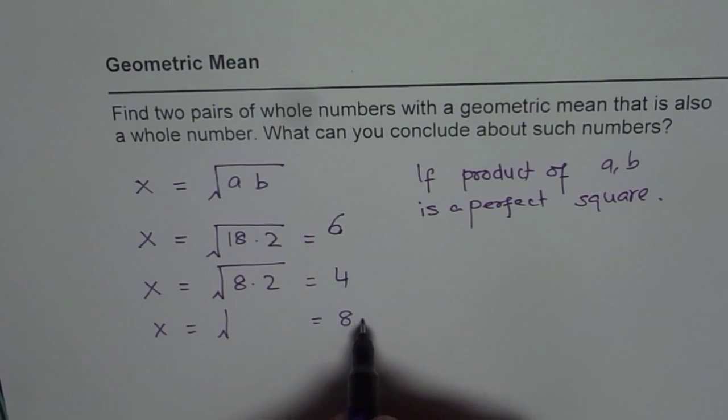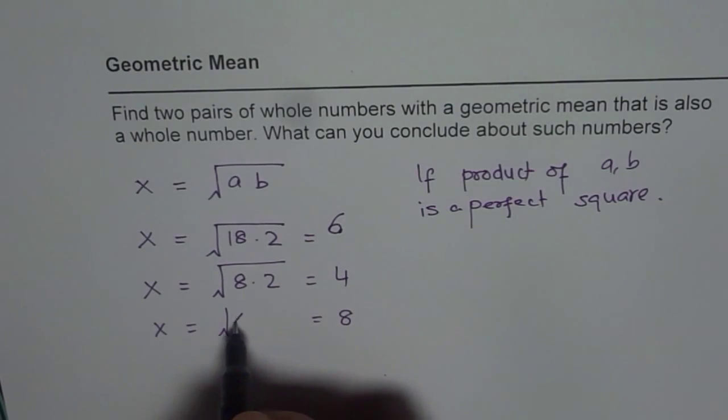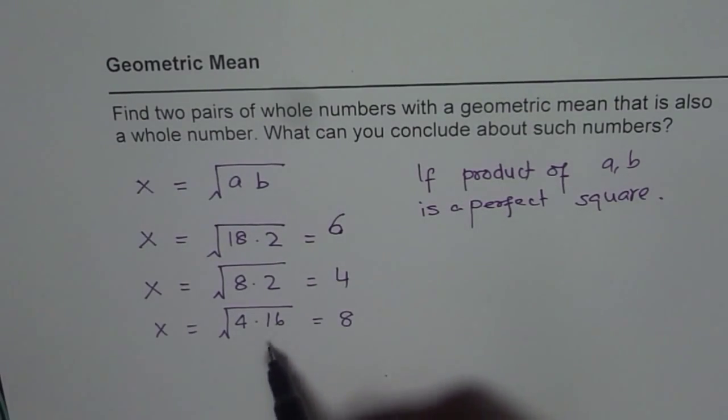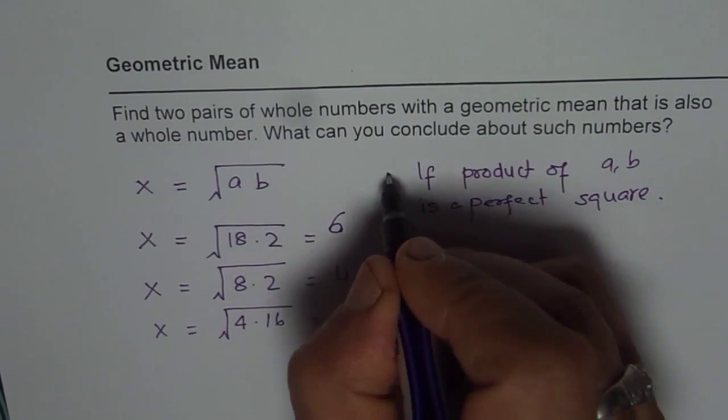Well, 8 times 8 is 64. Then we can say 4 times 4 times 16. So that could also be a result. So product of two numbers could be a perfect square. That is one way.